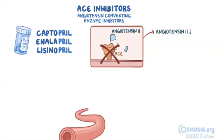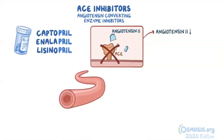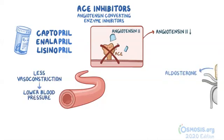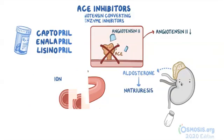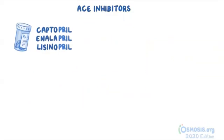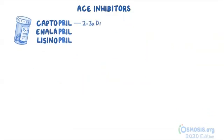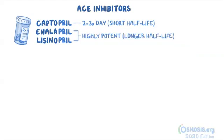With less angiotensin 2 in the bloodstream, there is less vasoconstriction, and therefore these medications effectively lower blood pressure. In addition, they lower aldosterone release, which causes natriuresis, or excretion of sodium, by the kidneys. Captopril should be taken 2-3 times daily because it has a short half-life. But enalapril and lisinopril are highly potent and have a longer half-life than captopril.